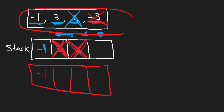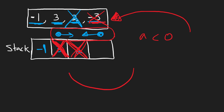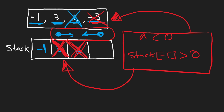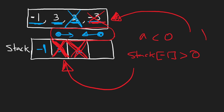A collision only happens when the element we're adding is negative — meaning the asteroid is less than 0 — and the top of our stack is greater than 0, meaning it's moving to the right. If they're in opposite directions, and the most recent one is negative and the top of the stack is positive, only then do we have a collision.